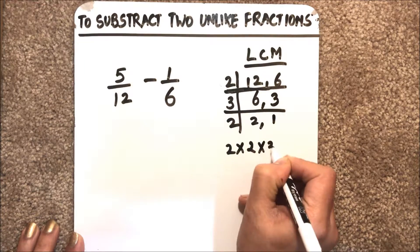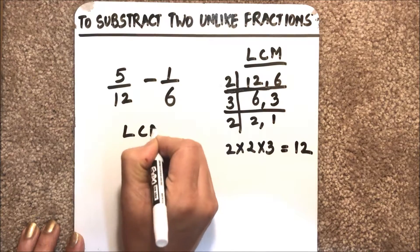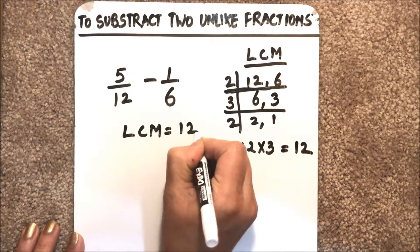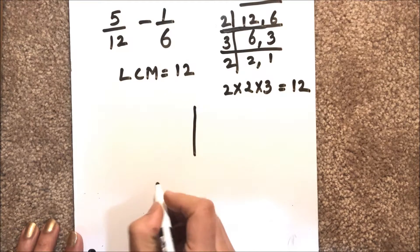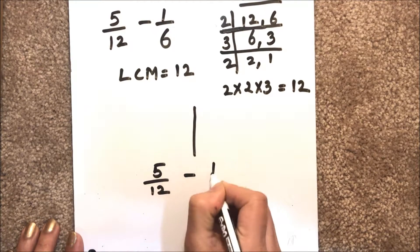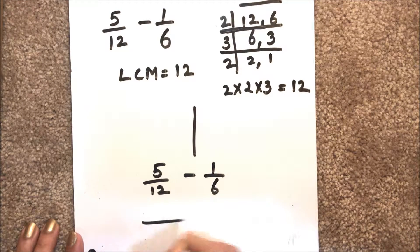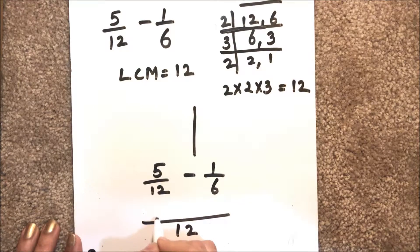Now what we'll do is write the numbers like this: 5 over 12 minus 1 over 6, and our LCM as 12 here. To find the number here, what we'll do is divide the LCM by the denominator of the first number, and the resultant number we'll multiply by the numerator of the first number.